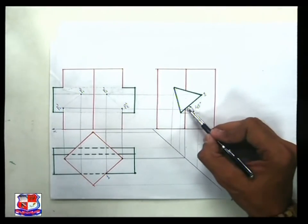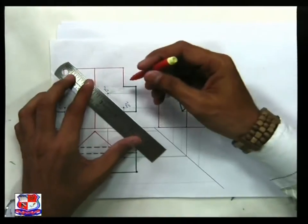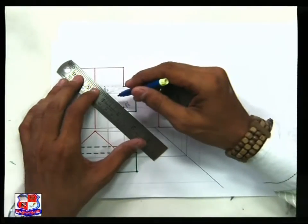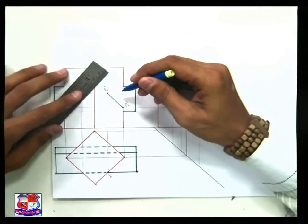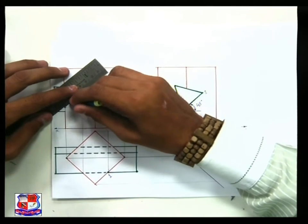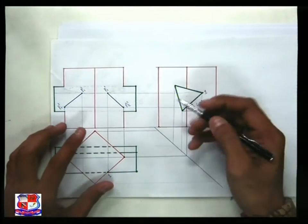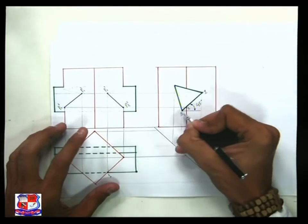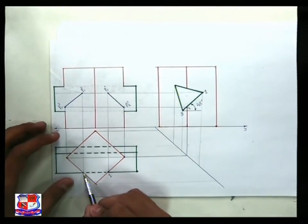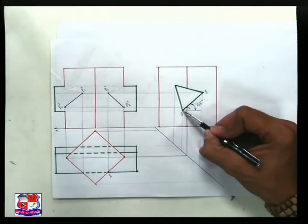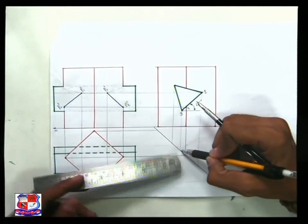Points one and two are both towards us and therefore visible, so join them with a full line. On the other side it is a mirror image. For point number three — which is behind the corner — take a projection with a straight vertical line that cuts the middle line here.